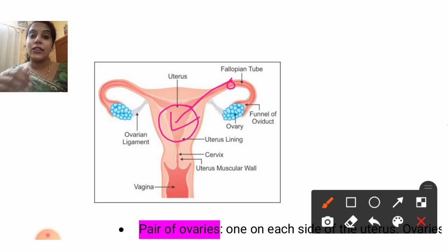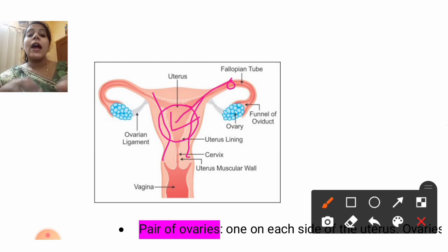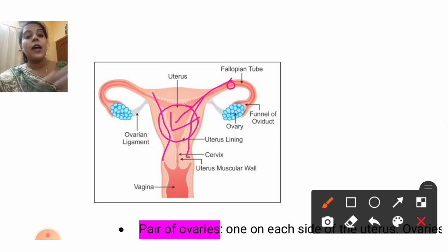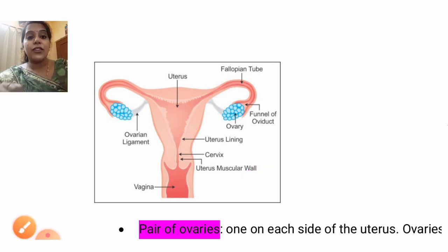When fertilization does not happen, the endometrium wall — the blood vessels — will break down and will discharge as blood and mucus. This process we call the menstruation cycle.